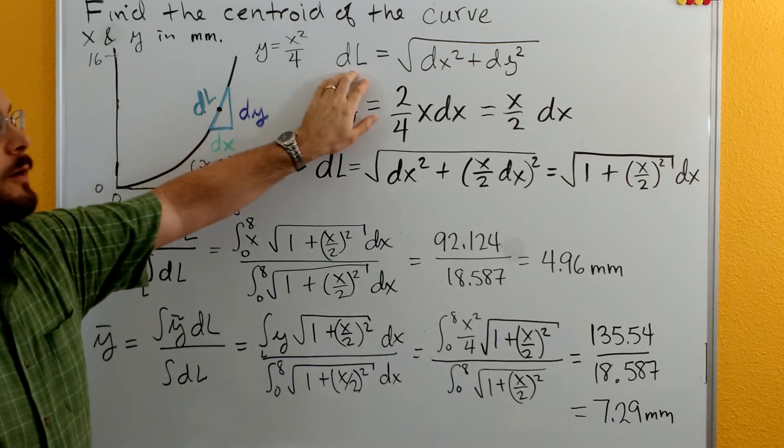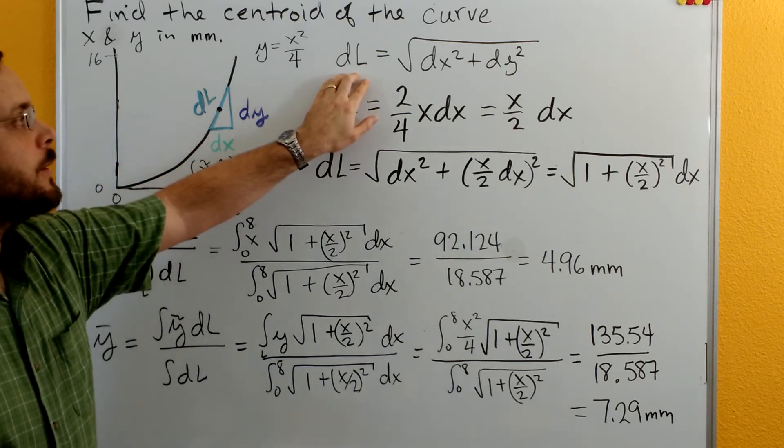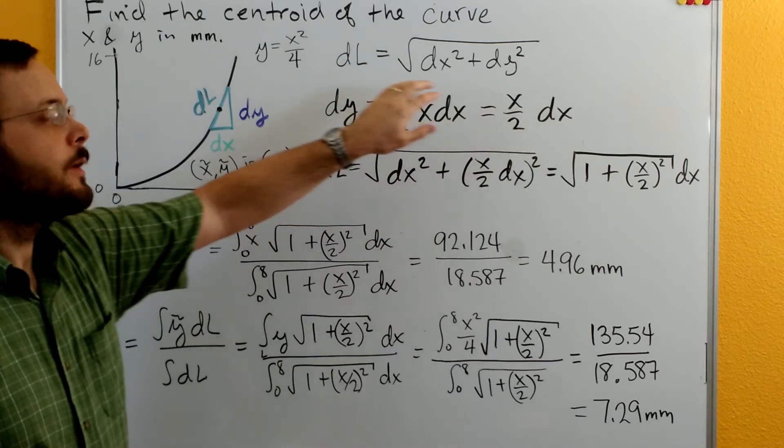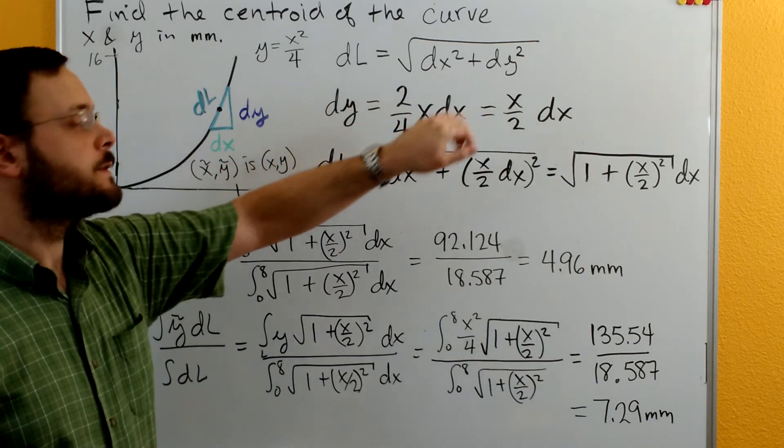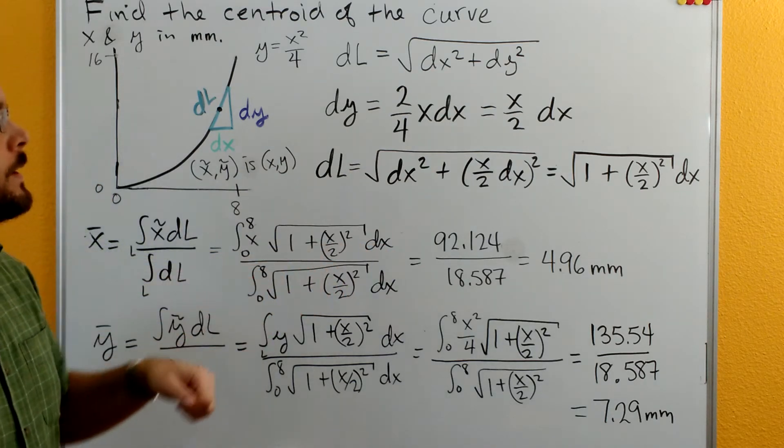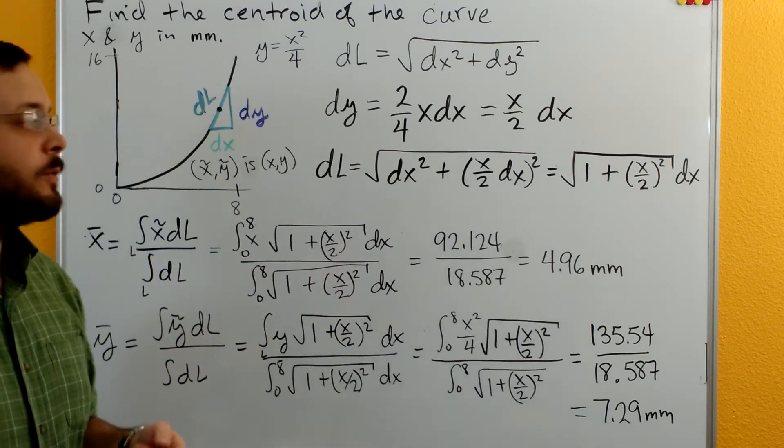By the Pythagorean formula, dl squared is equal to dx squared plus dy squared. Our dl is equal to the square root of dx squared plus dy squared. We need to get rid of either x or y out of that equation.